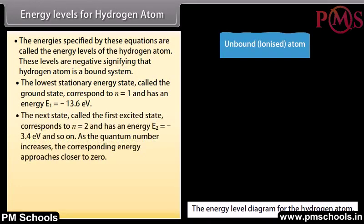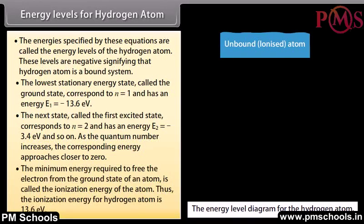The next state, the first excited state, corresponds to n = 2 with energy E₂ = −3.4 eV, and so on. As the quantum number increases, the corresponding energy approaches closer to zero. The minimum energy required to free the electron from the ground state is called the ionization energy. The ionization energy of hydrogen atom is 13.6 eV.